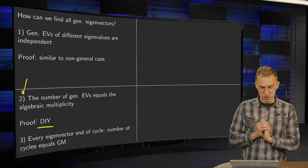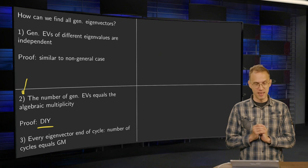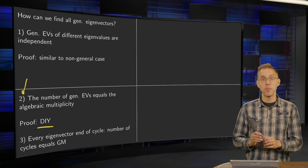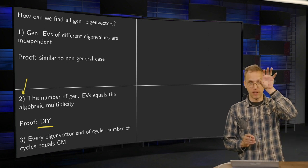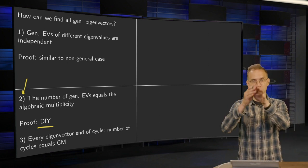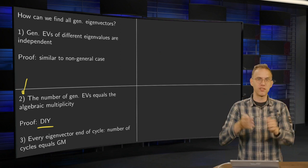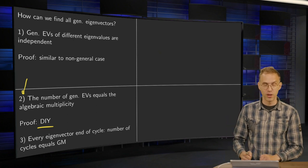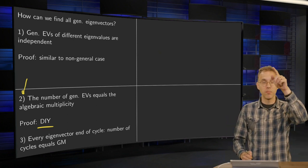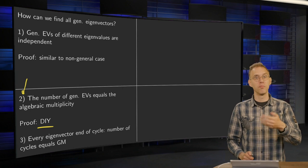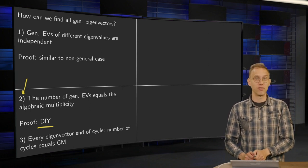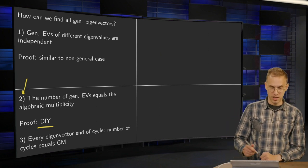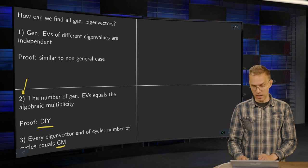So we will just use this. That every cycle, number three, is ended by a normal eigenvector. You know that the last eigenvector of a cycle, if you multiply with A minus λI, you get zero. So the last eigenvector of a cycle is always a normal one. So that means that the number of cycles equals the number of independent eigenvectors for a certain eigenvalue. So the number of cycles equals the geometric multiplicity of the eigenvalue.